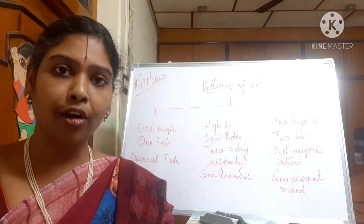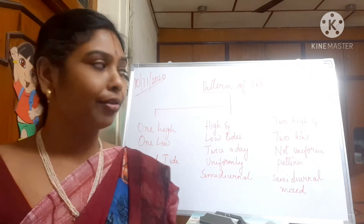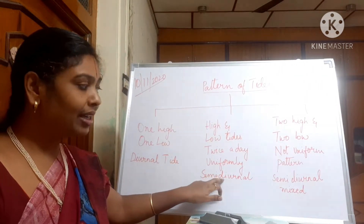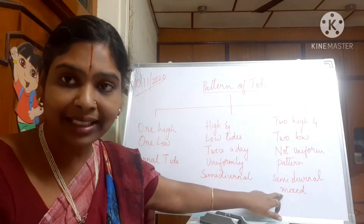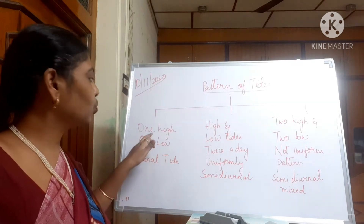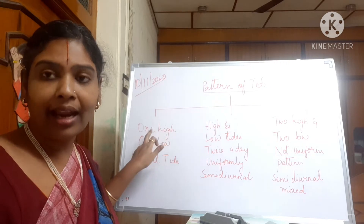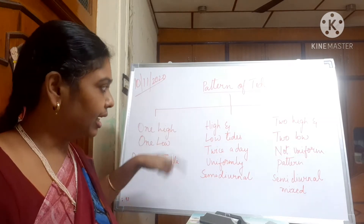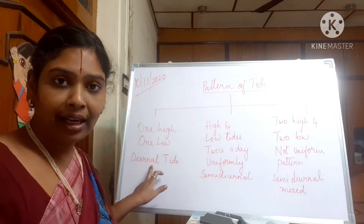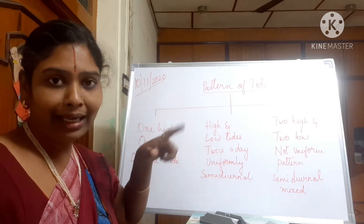Now let's see the patterns of tides and how they are formed. The three major patterns of tides are: a diurnal tide, a semi-diurnal tide, and a semi-diurnal mixed type of tide. A diurnal tide has one high tide and one low tide, done uniformly. This kind of tide is found normally in Southeast Asia and the Gulf of Mexico — all inland seas.